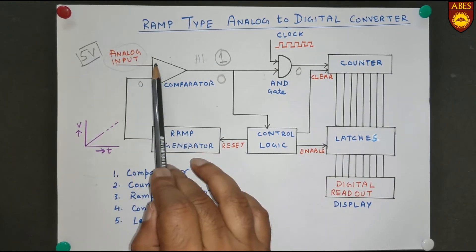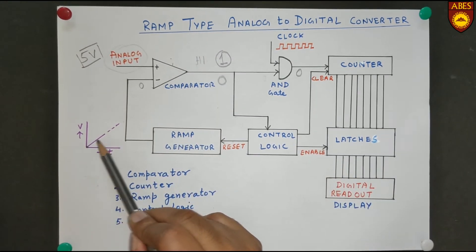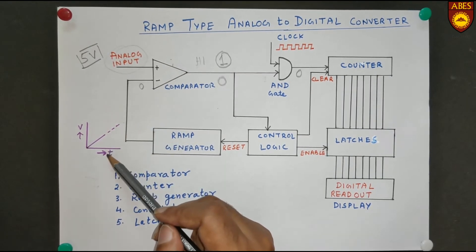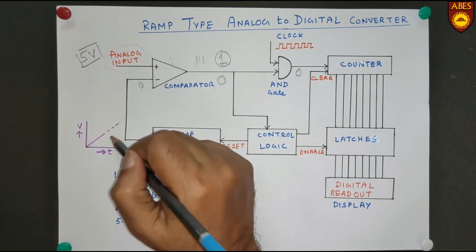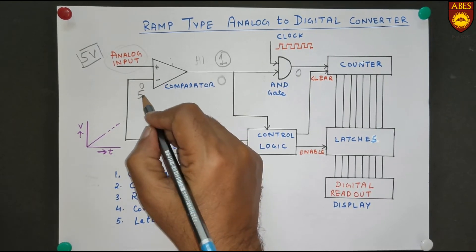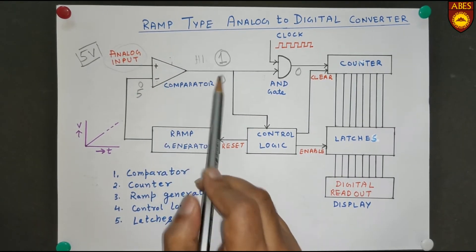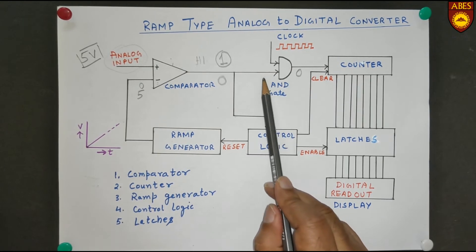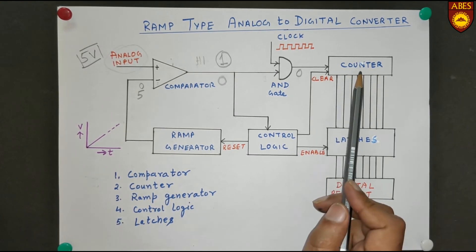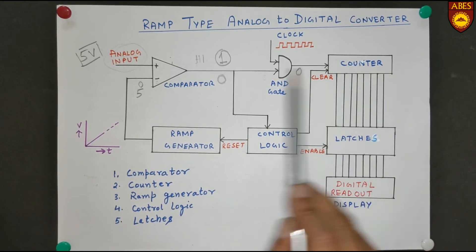As soon as the analog input is applied, the Control Logic starts the Ramp Generator, which produces a linearly increasing voltage. After some time, this voltage rises from 0 and reaches 5 volts. As soon as it exceeds 5 volts, the negative terminal input becomes higher, the Comparator output becomes 0, and since one AND gate input is 0, its output is 0. No more clock pulses reach the counter and counting stops.